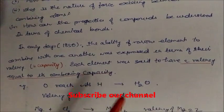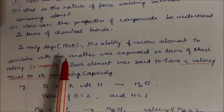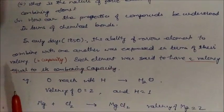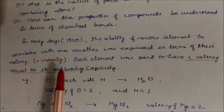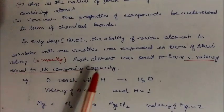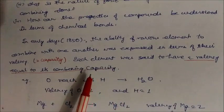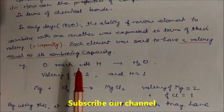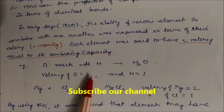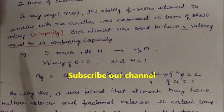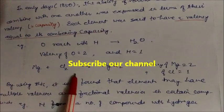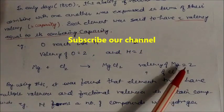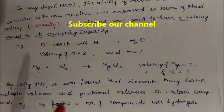Going back in history to the early days around 1815, the ability of various elements to combine with one another was expressed in terms of their valencies — the combining capacity of the element. For example, when oxygen reacts with hydrogen it forms water; valency of oxygen is 2 and hydrogen is 1. Another example: magnesium reacts with Cl2 to give MgCl2, so valency of magnesium is 2 and chlorine is 1.